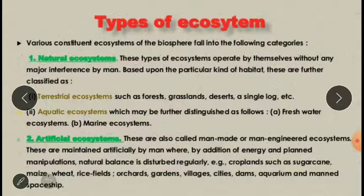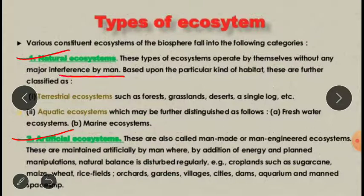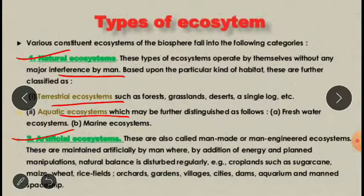In broad sense, there are two types of ecosystems: natural ecosystem and artificial ecosystem. Natural ecosystems operate by themselves without any major interference by man — they are naturally present on the earth. These natural ecosystems can be again of two types: terrestrial ecosystems such as forest, grasslands, deserts, etc., or aquatic ecosystems like a river, lake, pond, etc. This aquatic ecosystem can be divided into fresh water and marine water ecosystem.